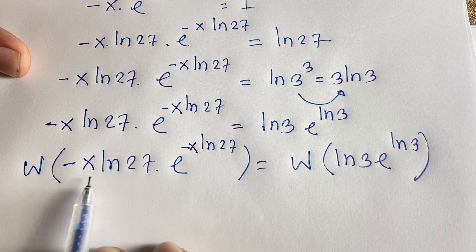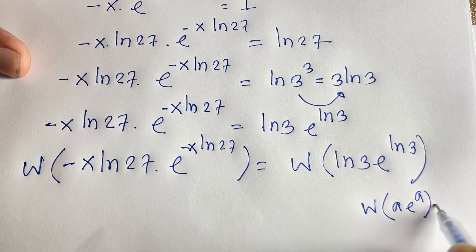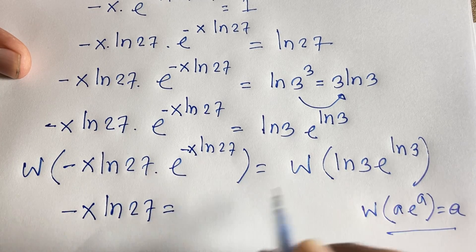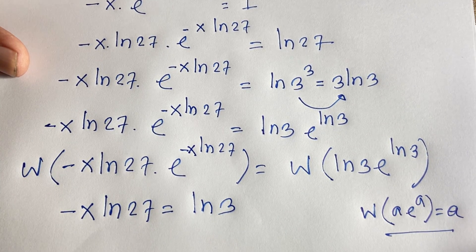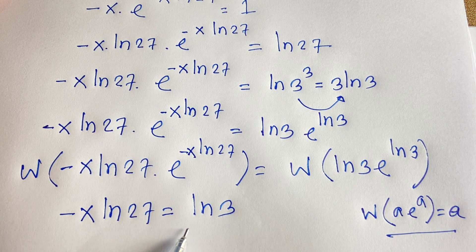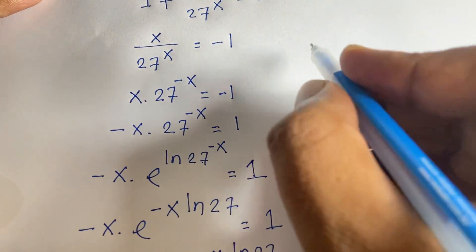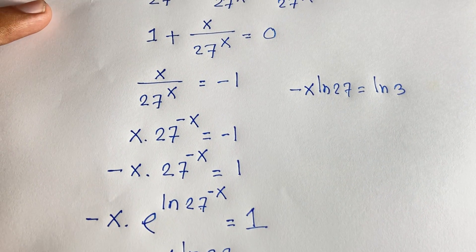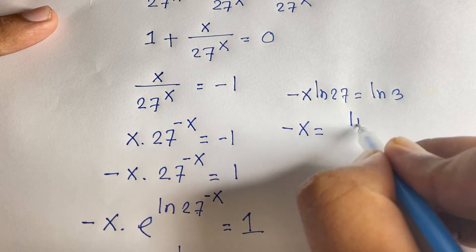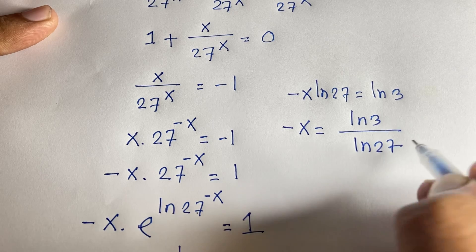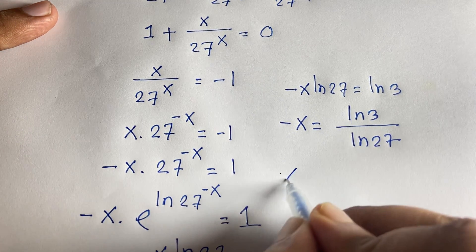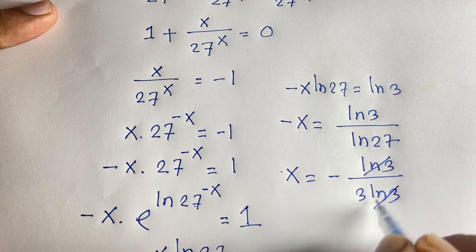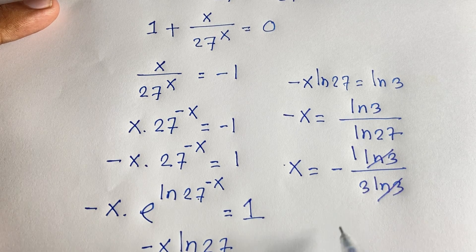Applying Lambert W: since W(a · e^a) = a, we identify a = -x · ln27 on the left and a = ln3 on the right. Therefore -x · ln27 = ln3, which gives -x = ln3 / ln27 = 1/3. Moving the sign, x = -1/3.